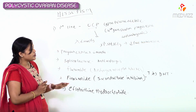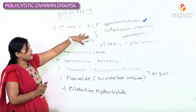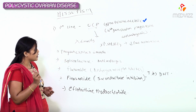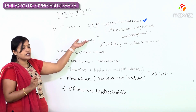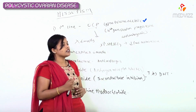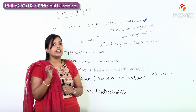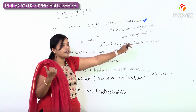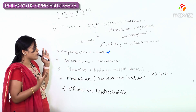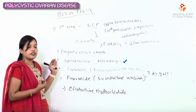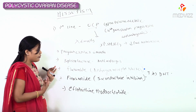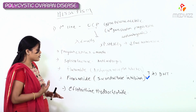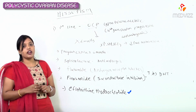To summarize hirsutism drugs: First line is OC pills especially containing cyproterone acetate (4th generation progesterone, anti-androgenic, increases SHBG, decreases free testosterone), used continuously for 6 months. Then spironolactone (potassium-sparing diuretic), flutamide (androgen receptor blocker), finasteride (5-alpha reductase inhibitor), and eflornithine hydrochloride cream.